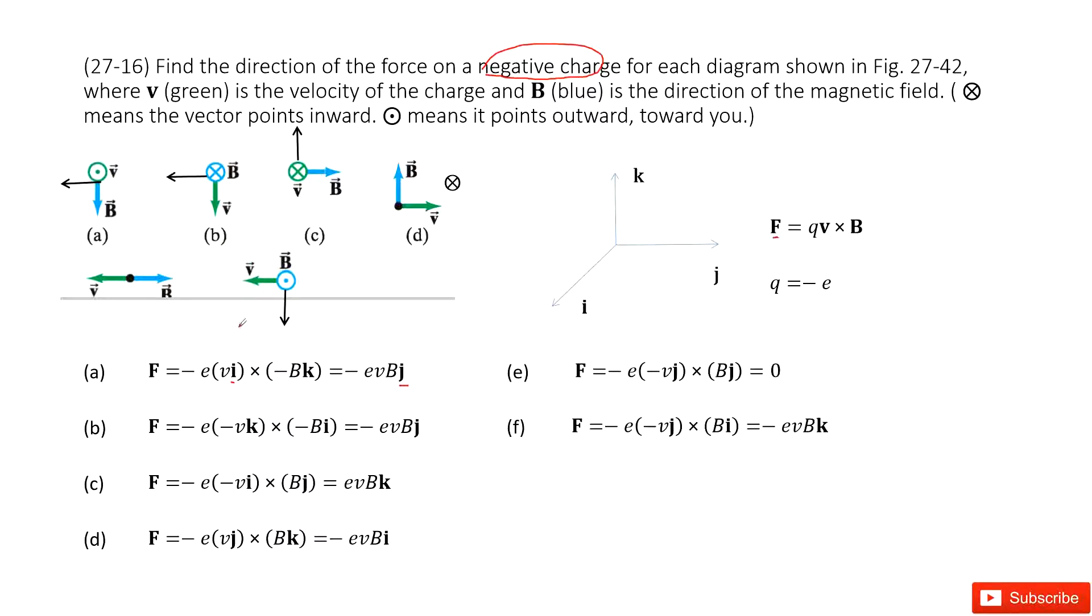And in the second case, you can see the V direction is pointing down. So negative K direction. And the B is pointing inward, negative I. And then we can see these two negative sides cancel. It becomes negative K cross I, becomes negative J. Negative J still to the left.